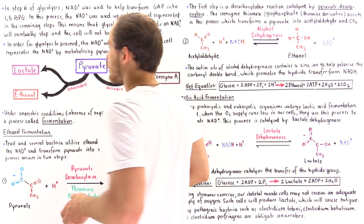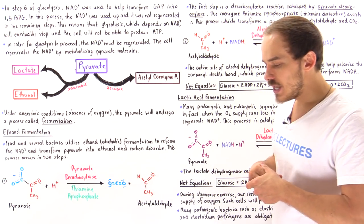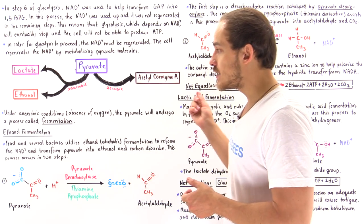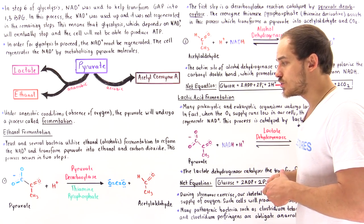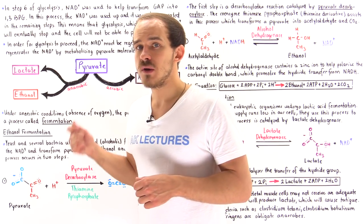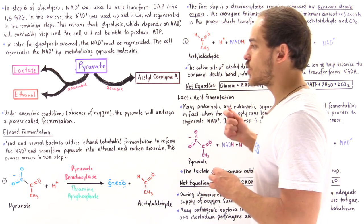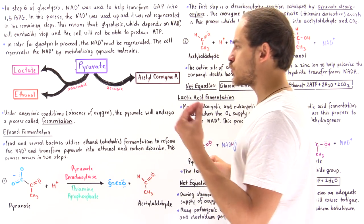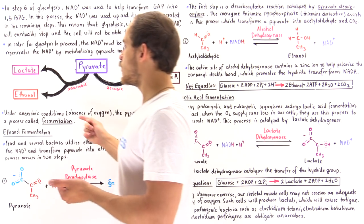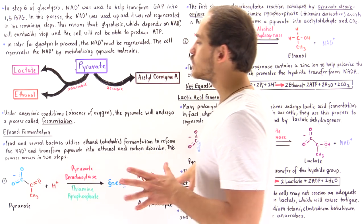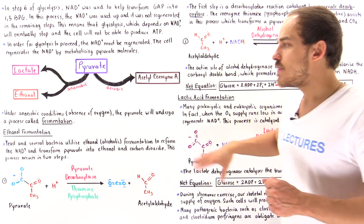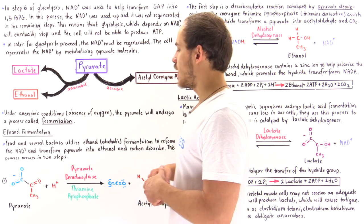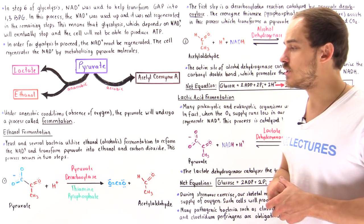Let's focus on ethanol fermentation. Yeast cells and several other bacterial cells utilize alcoholic fermentation to reform those NAD+ coenzyme molecules. The pyruvate molecule is ultimately transformed into ethanol, and this process takes place in two steps. The first step is a decarboxylation process catalyzed by the enzyme pyruvate decarboxylase.